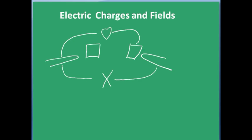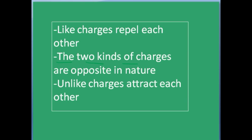Now why does this happen? Experiments have shown that there are two kinds of something which we shall call a charge from now. These two kinds of charges show a definite behavior: like charges repel each other, unlike charges attract each other, and the two kinds of charges are opposite in nature. They compensate and nullify each other's effect.